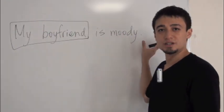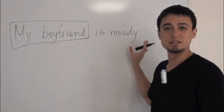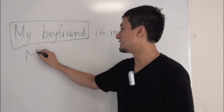My boyfriendが実際にそうであればこのまま覚えてください。でもそうじゃない場合は、自分の周りにいる気分屋な人を思い浮かべて、その人の名前を入れてください。例えば「田中さん is moody.」「Mr.田中 is moody.」Or「My boss is moody.」でもいいですね。